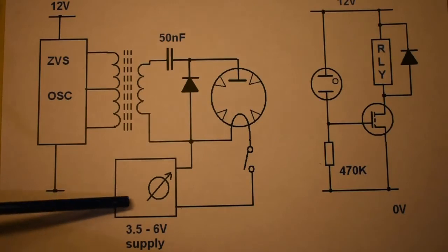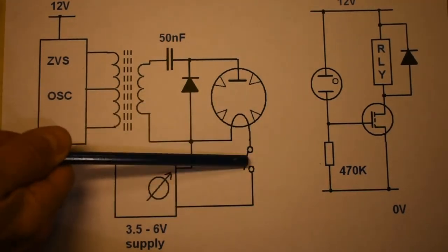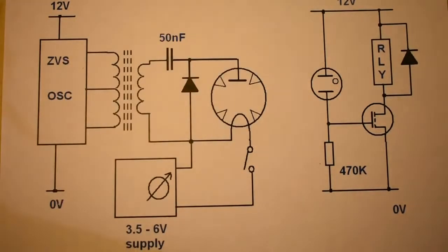The magnetron heater is supplied from an external supply, which is variable, and the switch here is normally closed by this relay over here.